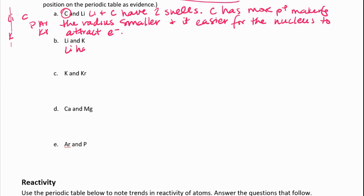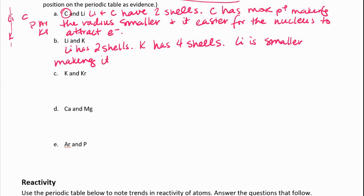If we think about lithium and potassium in the same group, lithium has two shells, potassium has four shells. So lithium is smaller, making it easier for that nucleus to attract electrons. So lithium would have the higher electronegativity.